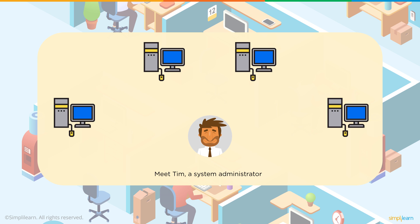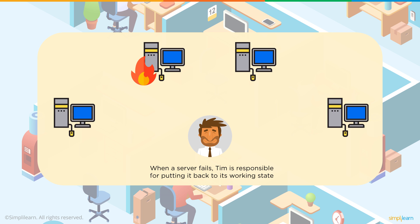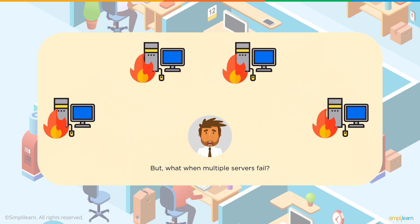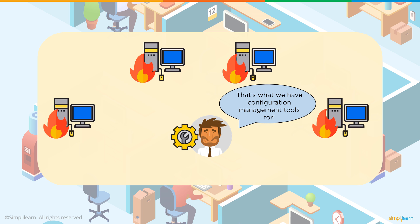So let's meet Tim. He's our system administrator and Tim is a happy camper working on all of the systems in his network. But what happens if a system fails — if there's a fire, a server goes down? Well Tim knows exactly what to do. He can fix that fire really easily. The problems become really difficult for Tim, however, if multiple servers start failing, particularly when you have large and expanding networks. This is why Tim really needs to have a configuration management tool, and we need to decide what would be the best tool for him.